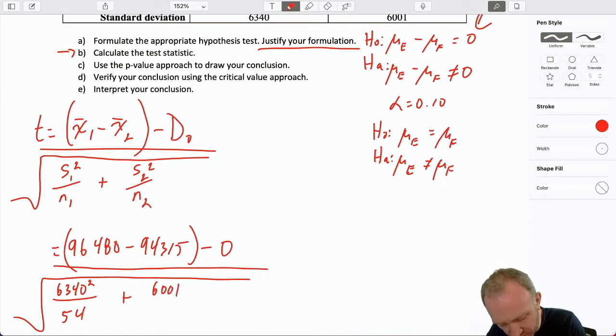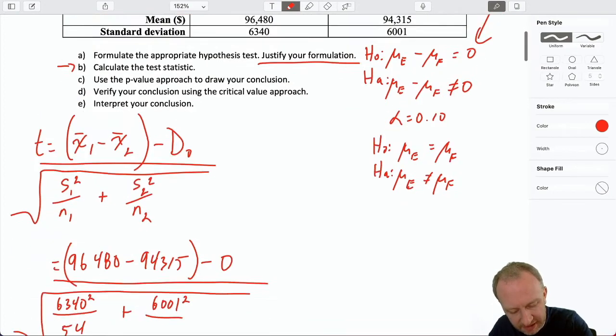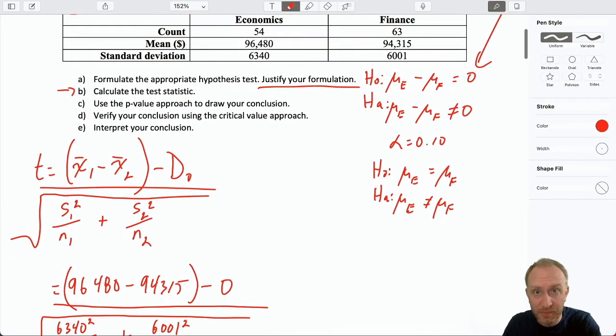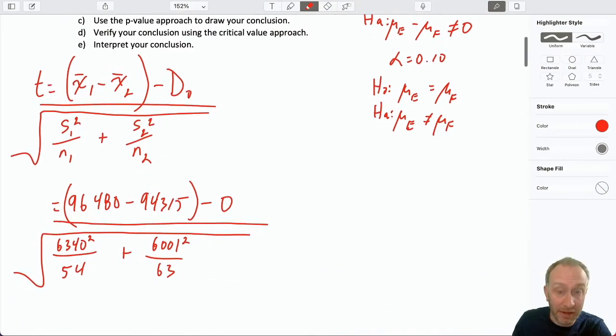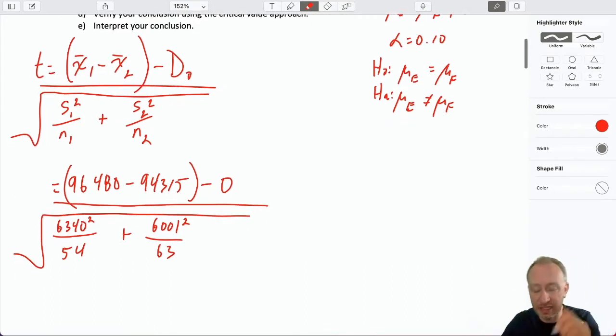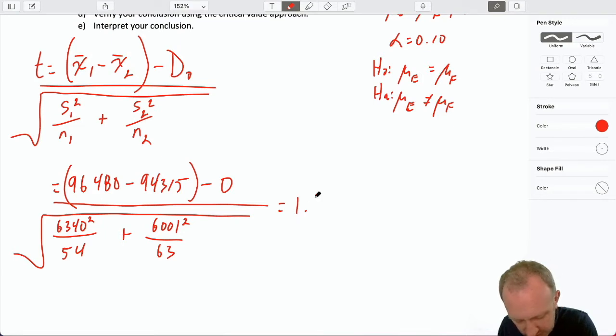And our standard deviations here are 6,340. And that's a standard deviation, so I need to square that. Divided by our sample size, which for economics was 54. And here's 6,001 squared, divided by that sample size, 63. Now again, I always just need to point out that here I'm squaring it because I have a standard deviation. If I were given a variance, do not square it. Don't square the variance. It's already squared. So here I have the standard deviation. I do need to square it. So what is this going to give me? I have 96,480 minus 94,315 and divide that by the standard error, 6,340 squared over 54, plus 6,001 squared over 63. So that gives me 1.89 as my test statistic.